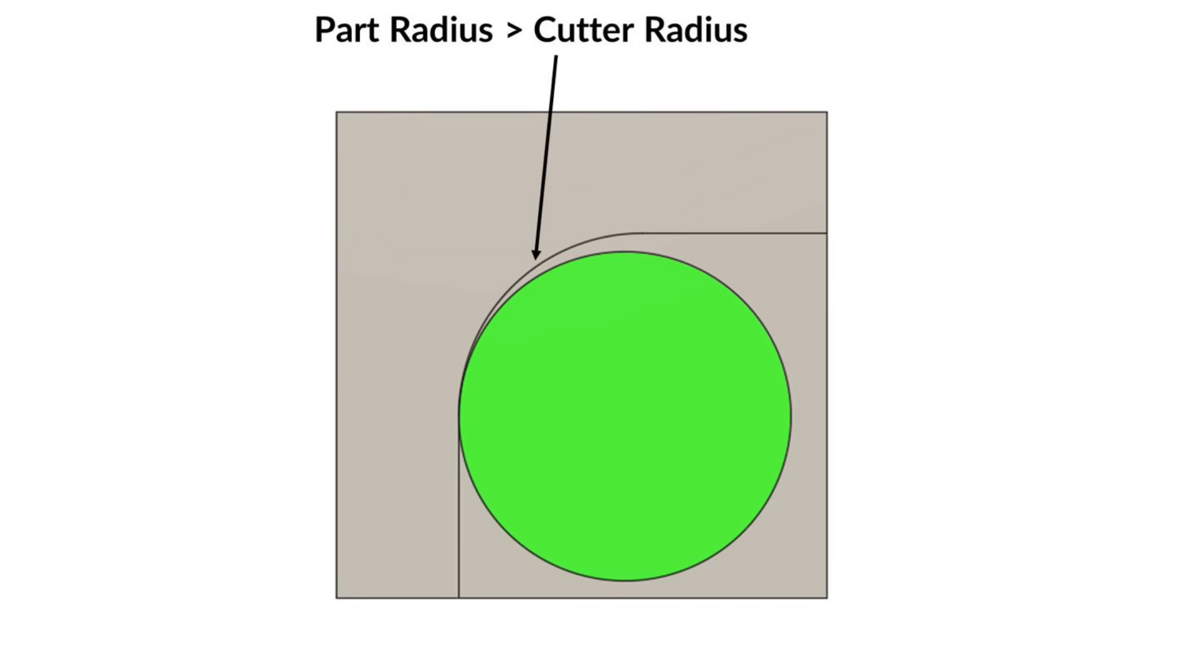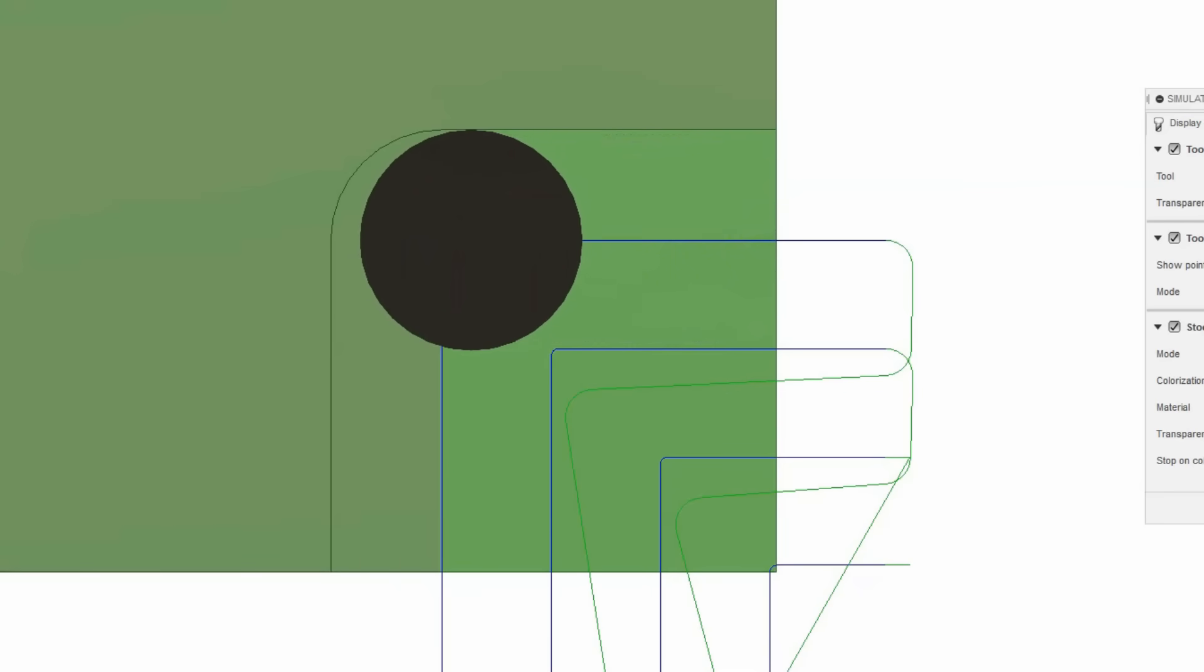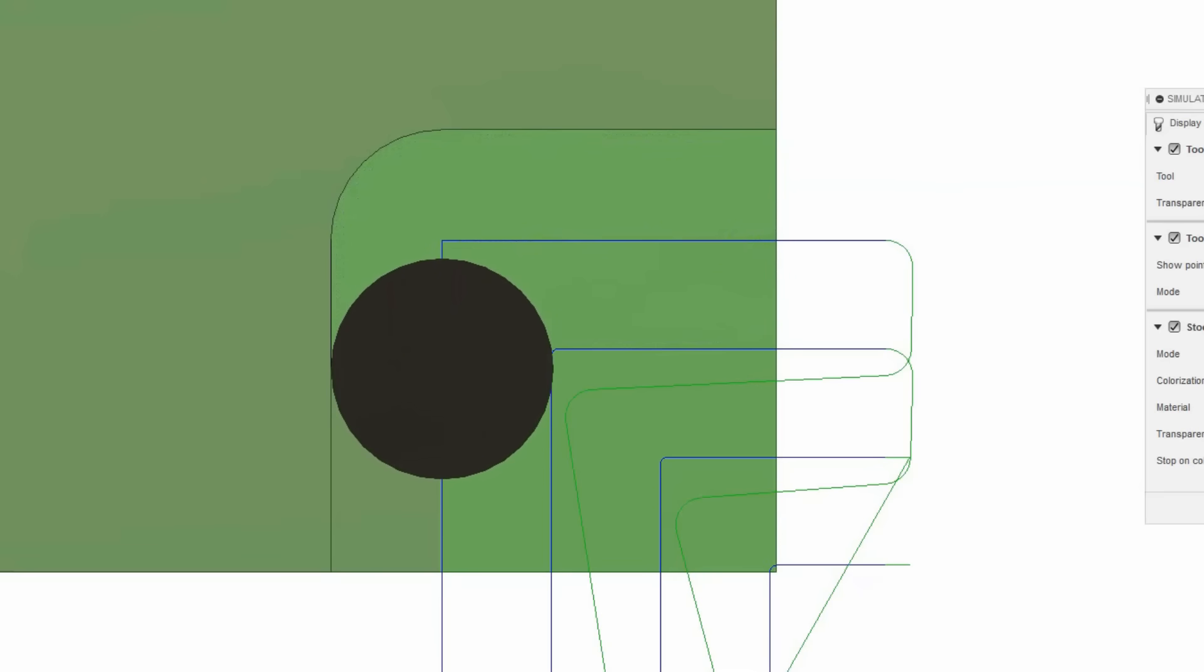Know the size of the tooling you are using and always keep the internal fillet radii slightly larger. This keeps the tool from rapidly increasing the amount of material it's cutting when it makes it to the corner. If the tool diameter exactly matches the internal fillet then as the tool enters the corner it will suddenly switch to a huge amount of cutting engagement momentarily which could cause the cutter to break.